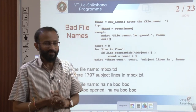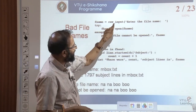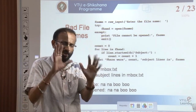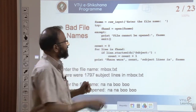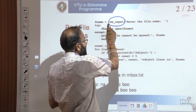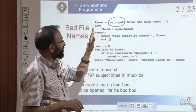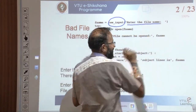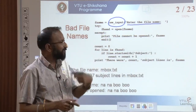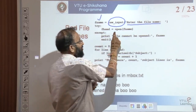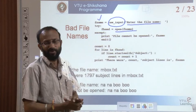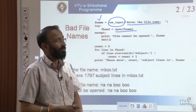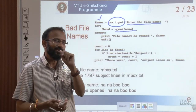We have a concept in Python where we try to read a file given by a user. We tell the user to give the file name, and we handle that. The function name is raw_input — it asks the user to enter a file name, which we store in a variable called fname. Then we try to open that file in read mode. If the file exists, no problem. What if the file does not exist? It will throw an error.